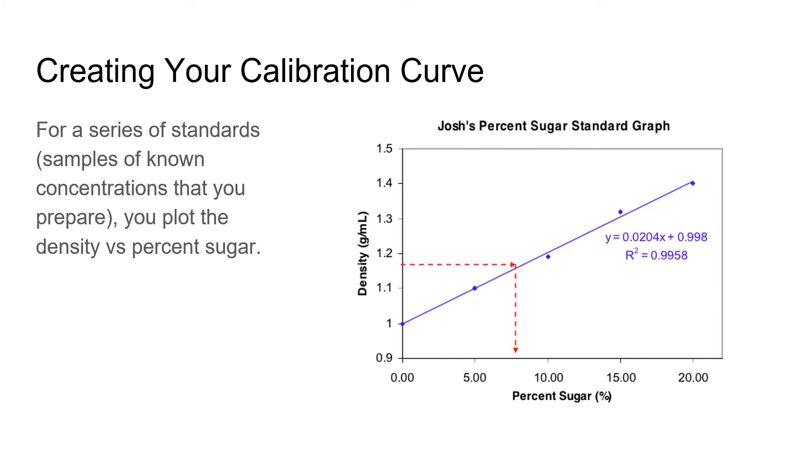That way when you have an unknown sample and you don't know the percent of sugar in it, but you know its density, you can figure out the percent of sugar in that sample based on this curve.